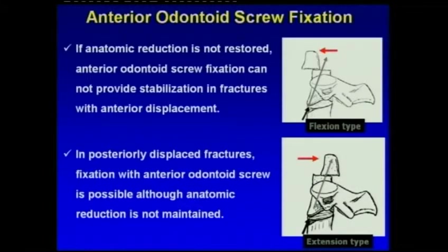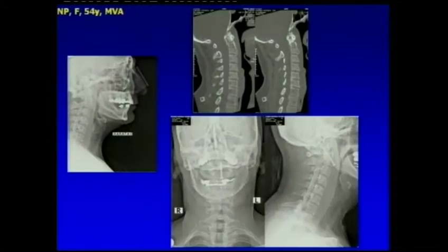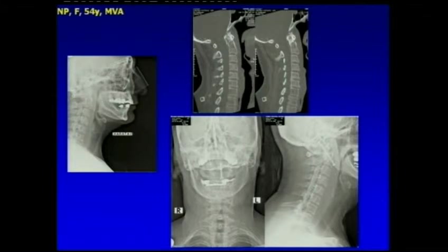If anatomic reduction is not restored, anterior odontoid screw fixation cannot provide stabilization in fractures with anterior displacement. In posteriorly displaced fractures, fixation with anterior odontoid screw is possible although anatomic reduction is not maintained. As a case example, a 40-year-old male patient with an anterior oblique fracture underwent anterior odontoid screw fixation.